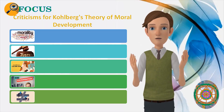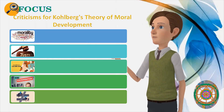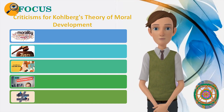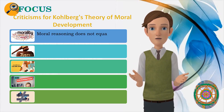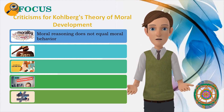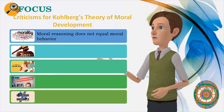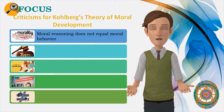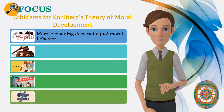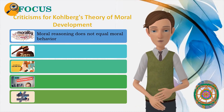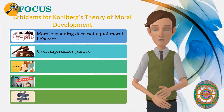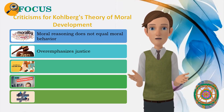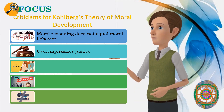Kohlberg's theory played an important role in the development of moral psychology. While the theory has been highly influential, aspects of it have been critiqued for a number of reasons. First, moral reasoning does not equal moral behavior. Kohlberg's theory is concerned with moral thinking, but there is a big difference between knowing what we ought to do versus our actual actions. Moral reasoning, therefore, may not lead to moral behavior. Second, the theory over-emphasizes justice. Critics have pointed out that Kohlberg's theory over-emphasizes the concept of justice when making moral choices. Factors such as compassion, caring, and other interpersonal feelings may play an important part in moral reasoning.